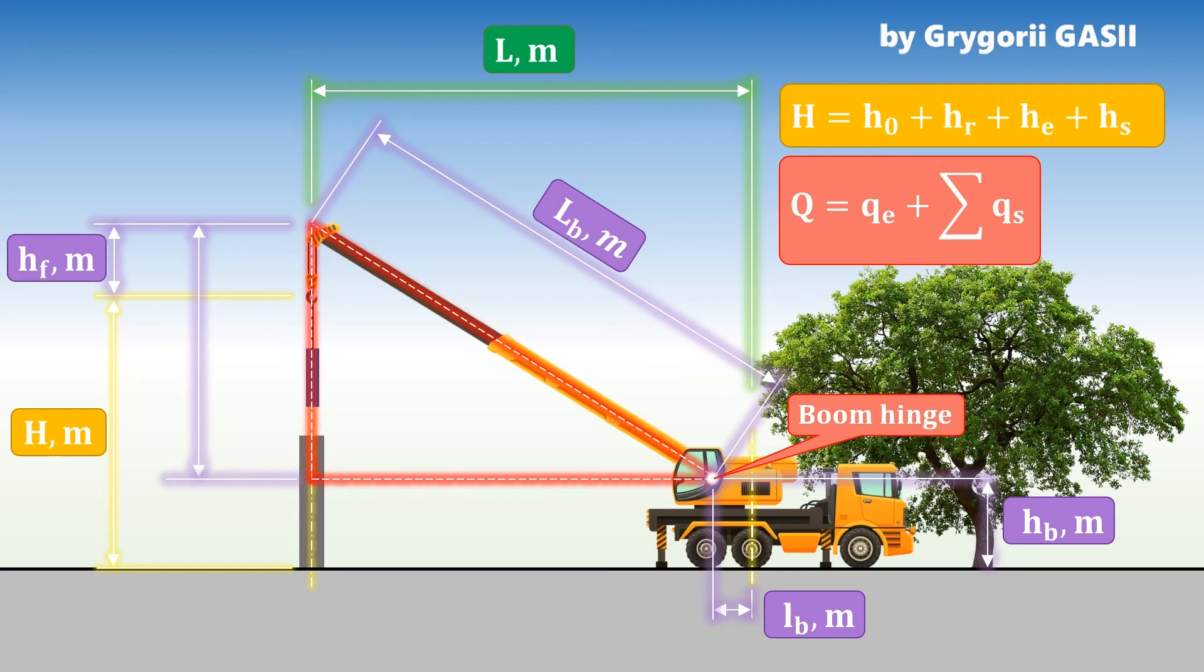Thus it is possible to determine the legs of a triangle, the hypotenuse of which is equal to the length of the boom. So, these are the main technical parameters that are used for the right choice of a crane.